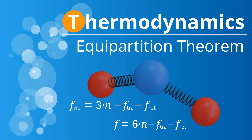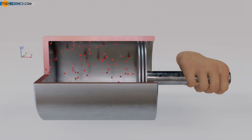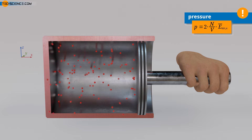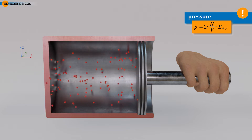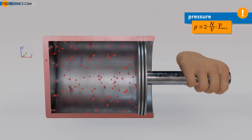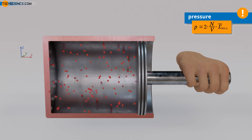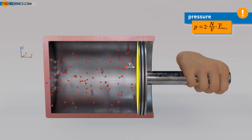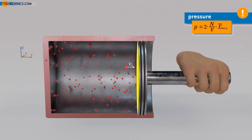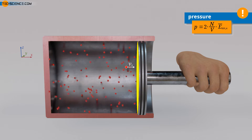This video covers the equal distribution of energy among degrees of freedom, known as the equipartition theorem. In a previous video on the relationship between pressure and temperature in kinetic theory, a formula for calculating the pressure of ideal gases was derived. In this equation, N denotes the number of molecules in a gas volume V, such as the volume of a gas cylinder, and E_kin refers to the mean kinetic energy of the molecules, with which they collide with a boundary surface and exert pressure P.